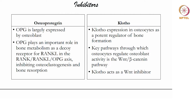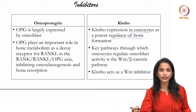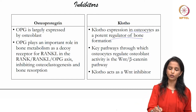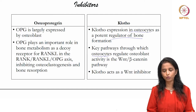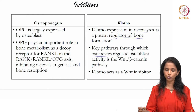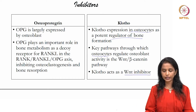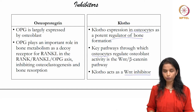Osteoprotegerin is secreted by osteoblasts and has an inhibitory activity once adequate bone formation has occurred, so it plays both a promoter and inhibitory role. Clotho is expressed in osteocytes and is a potent regulator of bone formation. The WNT pathway is the key pathway in osteocyte activity, and Clotho acts as a WNT inhibitor, regulating osteocytic activity.